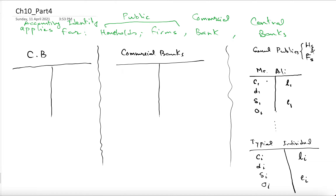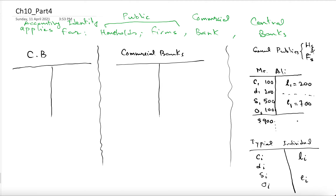Mr. Ali will tell us: I have $100 cash, $200 as deposit, $500 bond, and $100 other — so this totals $900. On the liability side, I have borrowed $200 as loan and $700 is my own money, my equity. So this is also $900 and the balance sheet is balanced.